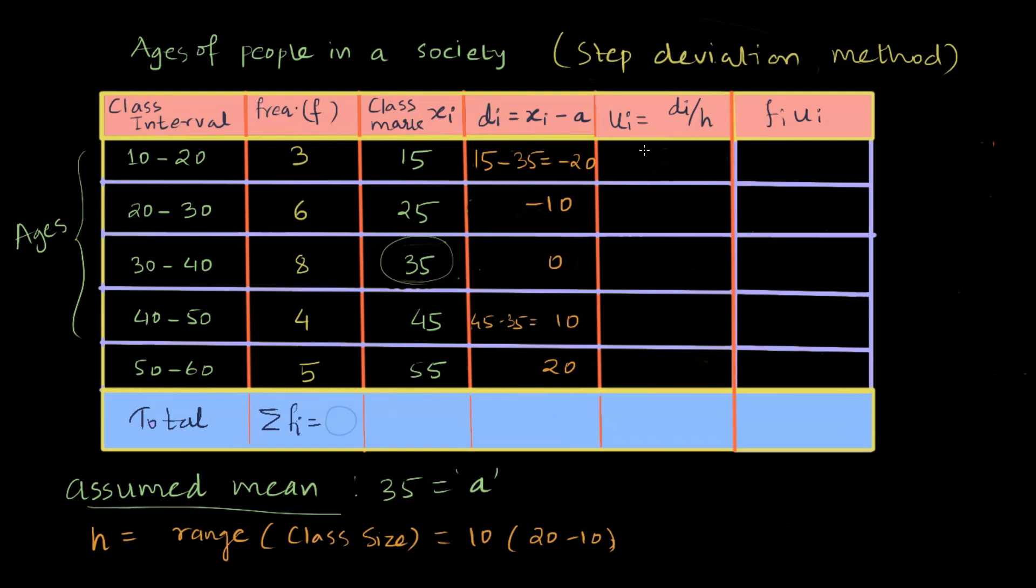So step deviation ui for each row is as follows: di minus 20 divided by 10 is going to be minus 2, and minus 10 by 10, which is minus 1. Then I get 0, 10 divided by 10 is 1, and 20 divided by 10 is 2.